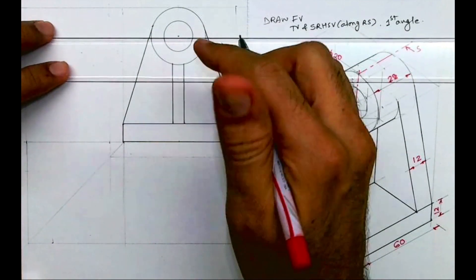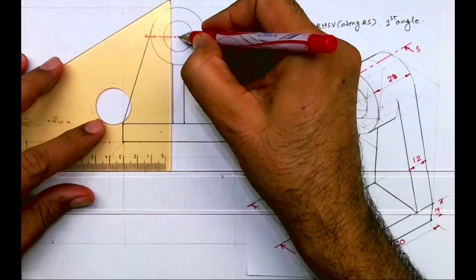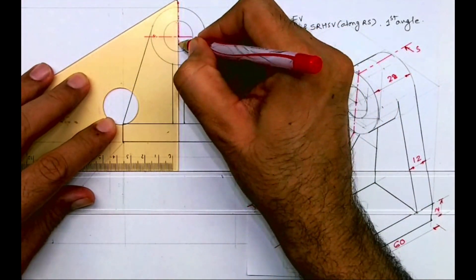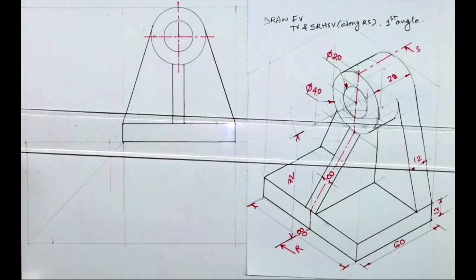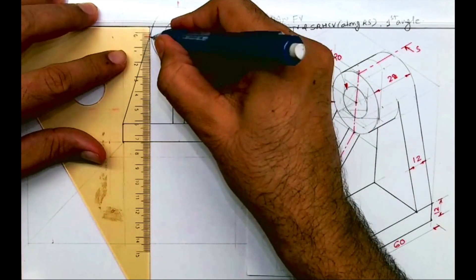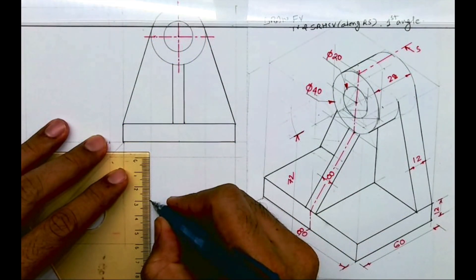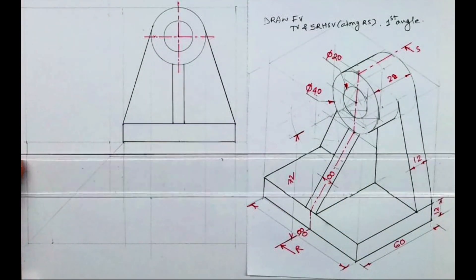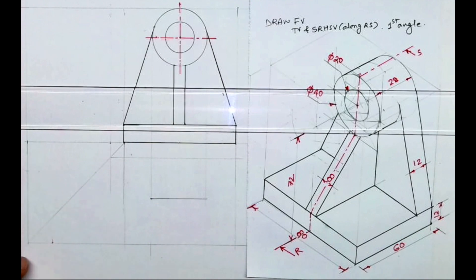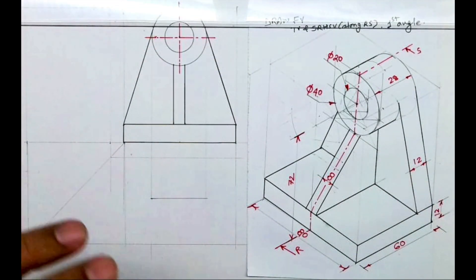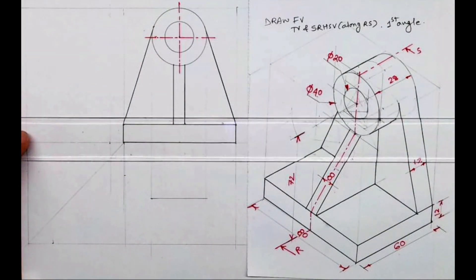Now we'll draw the top view. When you see from the top you'll see a rectangle, so the circular portion will appear as a rectangle. Then we'll take 12 mm from here and draw a line.